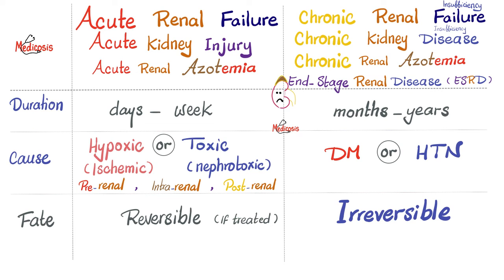Do you recall the difference between acute kidney injury and chronic kidney disease? Acute happens fast — days or weeks. Chronic takes months. To diagnose chronic kidney disease, you have to have all of these issues for more than three months; otherwise, we will not call it chronic.